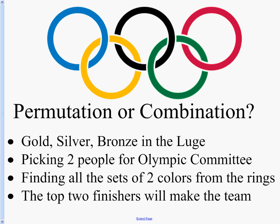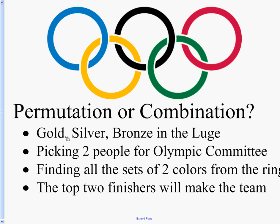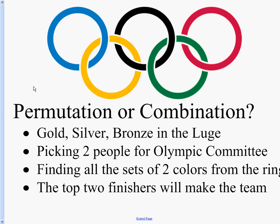Olympics question. Olympics are for another year, they'll be up in Canada. The Winter Olympics. There's gold, silver, bronze. Are we talking permutation or combination? As soon as I say gold, silver, and bronze, permutation, because why? Order matters. Picking two people for the Olympic committee, committee being the key word. Committees don't have an order, like you're better than this person, so order doesn't matter.